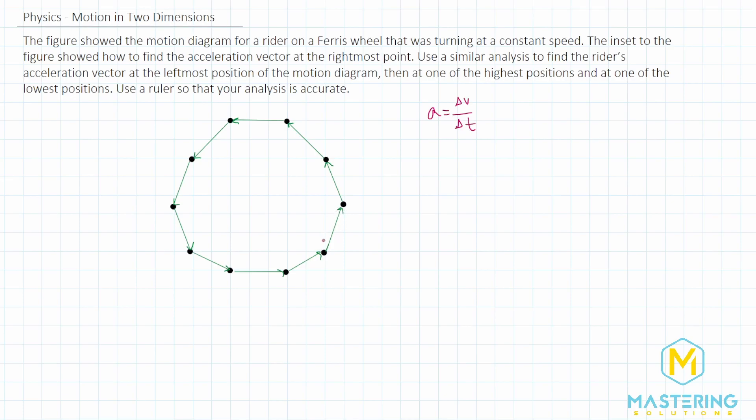So if we say this is our initial velocity for this point right here, and then this is the final velocity vector for this point right here, we'll take this delta v, which is the same thing as v final minus v initial, and we'll subtract the two.